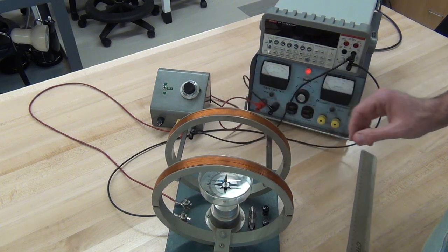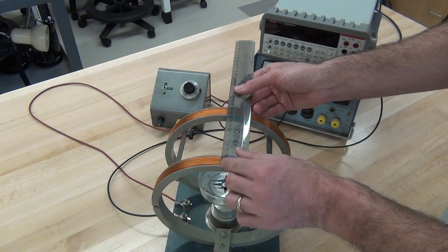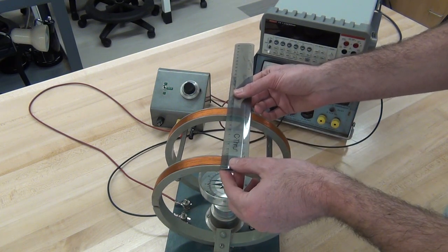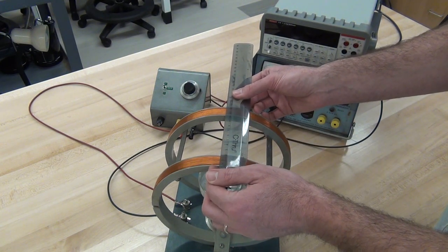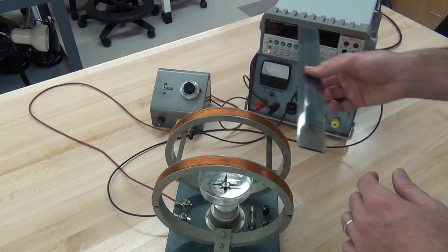And then you'll also want the coil separation, but not the outside to the outside or the inside to the inside. The actual middle of the coil to the middle of the coil, or easier to measure is an outside edge to an inside edge. That's your coil separation to use.